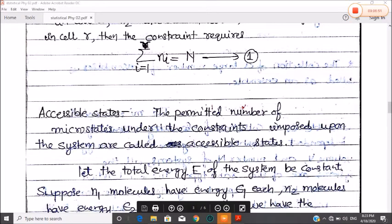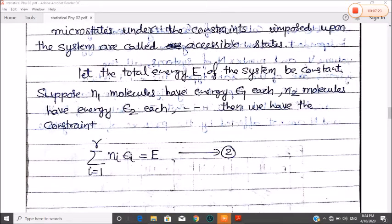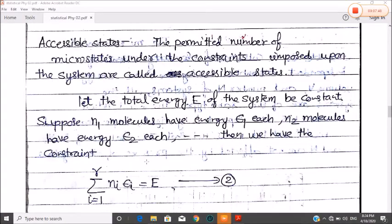Constraint imposed, restriction imposed. After permitted number, we use the number of microstates in the system which we call accessible states. We use the derivation in cell 1. Let the total energy E of the system be constant. Suppose n1 molecules have energy epsilon 1 each, and n2 molecules have energy epsilon 2 each. Then we have a constraint: one term multiplied n1 times epsilon 1, n2 times epsilon 2. This way for total r molecules, this will be summation from i equals 1 to r: ni times epsilon i equals E. This is equation number 2 for accessible states.